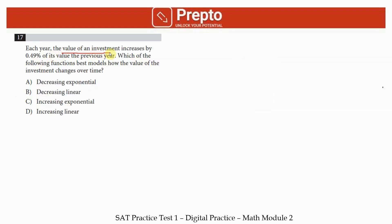Question 17: Each year the value of an investment increases by 0.49 of its value the previous year. If you start with 100, next year you won't have an increase of 0.49, you'll have an increase of more than that because you'll have an increase of 0.49 on 100.49. The increase every year is not the same, which means there's nothing linear about it. Since it's clearly increasing and increasing by the same percentage, hence it is exponential.